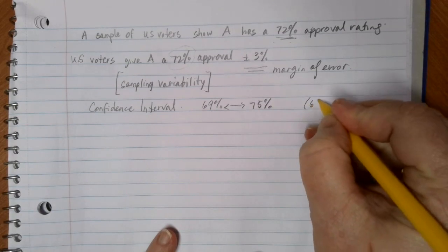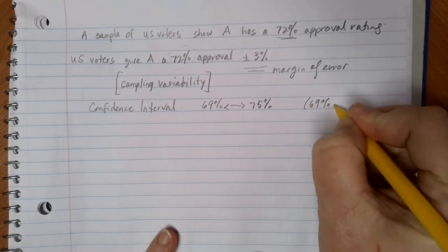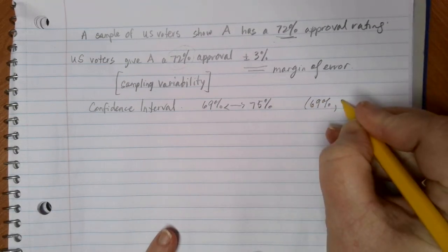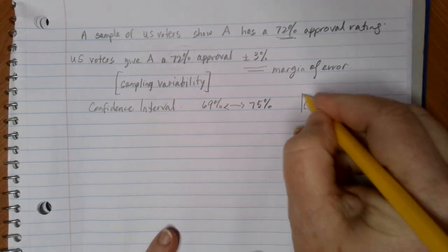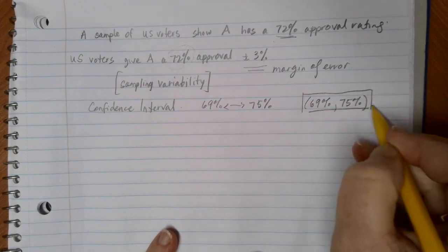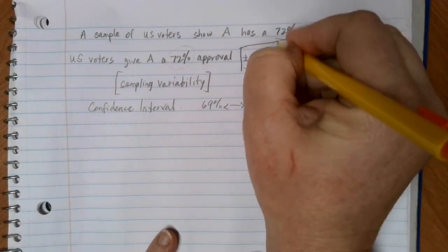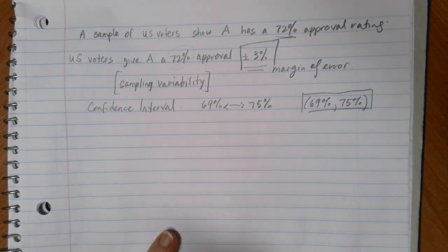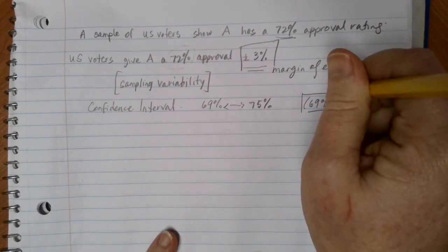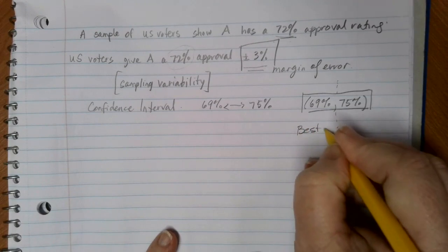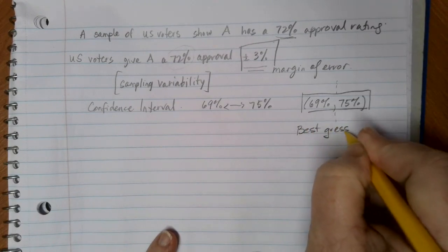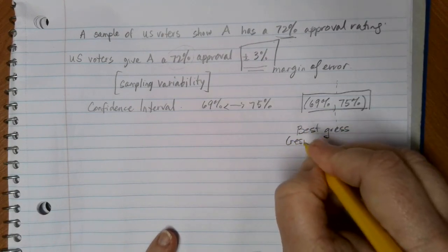A lot of times you'll see this written where you have 69% on the lower end, 75% on the upper end within parentheses. So this would be a confidence interval. This has to deal with a plus or minus 3% margin of error. And in the middle of that, we have our best guess, which is the result of the sample that we actually took.